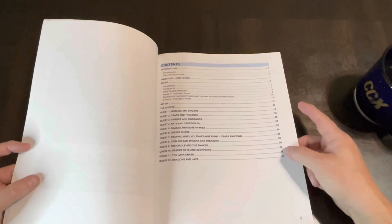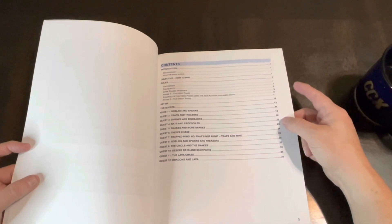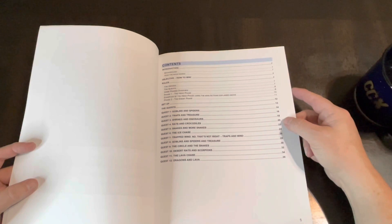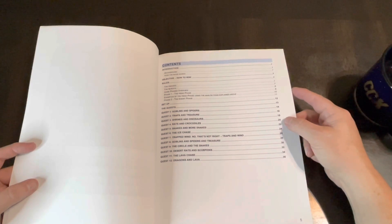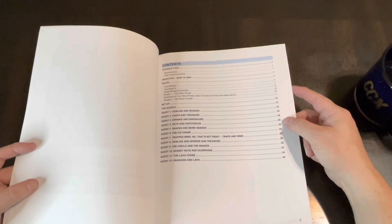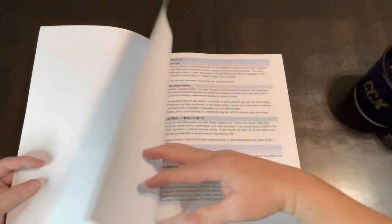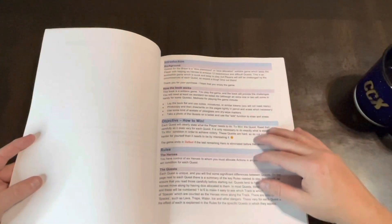There's 12 different quests here. Goblins and Spiders, Traps and Treasures, Shrines and Dinosaurs, Rats and Crocodiles, Snakes and More Snakes, the Ice Chase, Traps and Wind, Goblins and Spiders and Treasures, the Circle and the Snakes, Desert Rats and Scorpions, the Lava Chase, and Dragons and Lava.